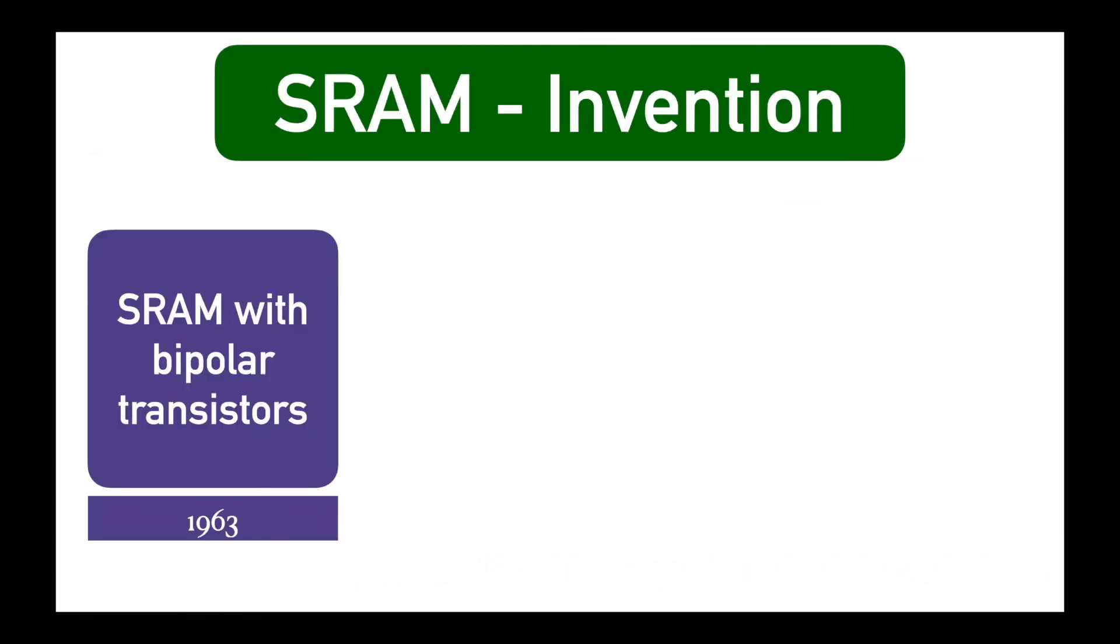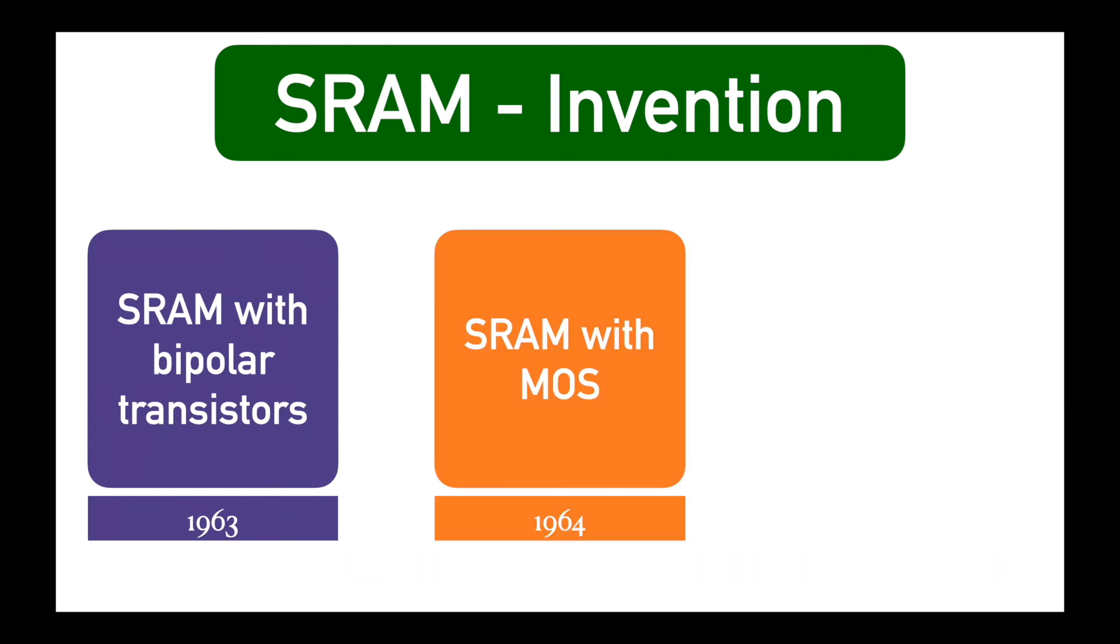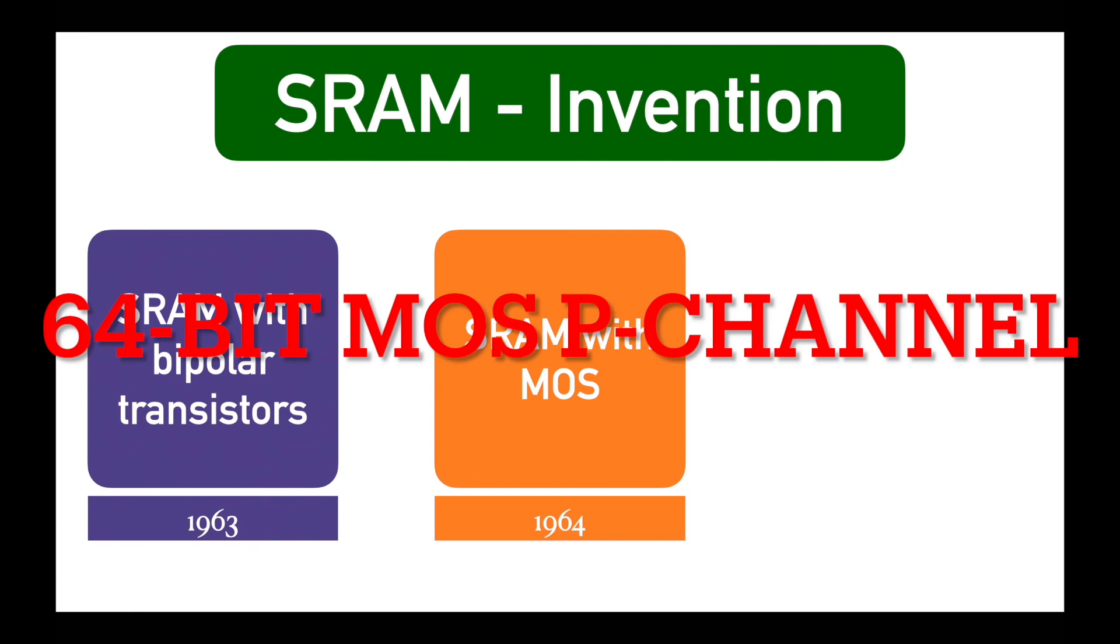SRAM firstly made up of bipolar transistors in 1963 by Robert Norman at Fairchild Semiconductor. Later, in 1964, it was invented with MOS technology by John Schmidt at Fairchild Semiconductor. It was 64-bit MOS P-channel SRAM.